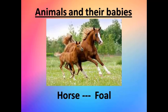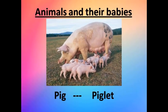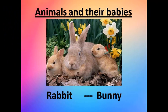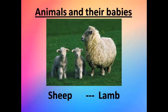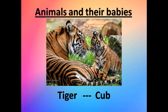Pig — pig's baby is called Piglet, P-I-G-L-E-T. And this cute one is Rabbit — rabbit's baby is called Bunny, B-U-N-N-Y. Sheep — sheep's babies are called Lamb, L-A-M-B. And this is a Tiger — tiger's baby is called Cub. Very good!